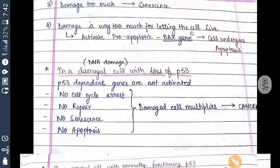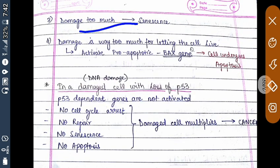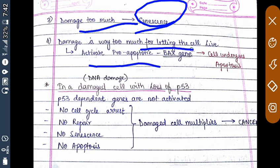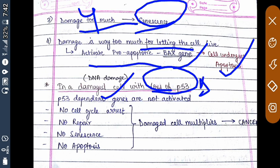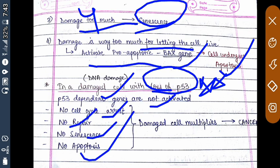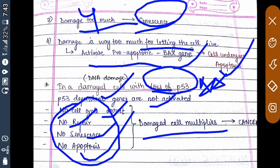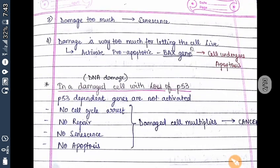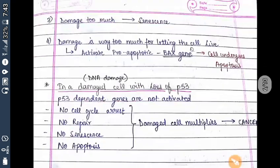If the damage is too much, p53 activates the BAX protein, and the cell undergoes apoptosis; or the cell undergoes senescence. However, if the cell is damaged but there is loss of function of p53, then p53-dependent genes are not activated. There will be no cell cycle arrest, no repair, no senescence, and no apoptosis. The damaged cell continues to divide, leading to cancer. These are the two key genes discussed.